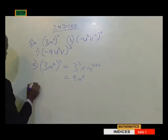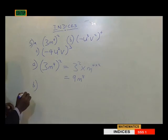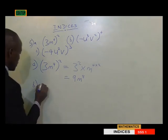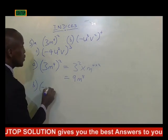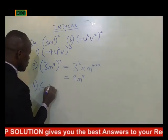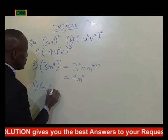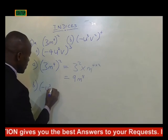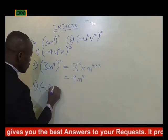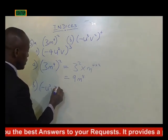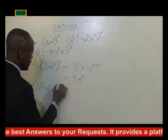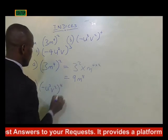For part b, we have minus u cubed times v squared, everything raised to power 4.